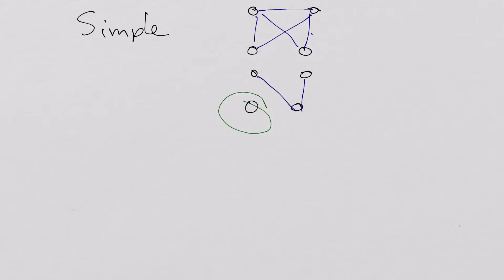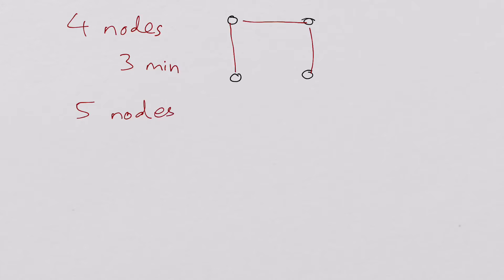Now if I've got four nodes again, if I want to draw a simple and connected graph, then the minimum number of edges is just to go around in a circle, in this case a square. So actually if I've got four nodes, the minimum amount of edges is three. However, if I've got five nodes, as you can probably guess, it's going to be four. If I had n nodes, then the minimum is going to be n minus one.